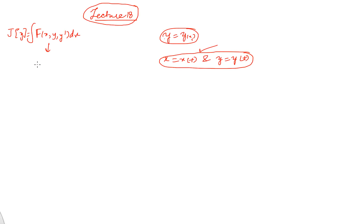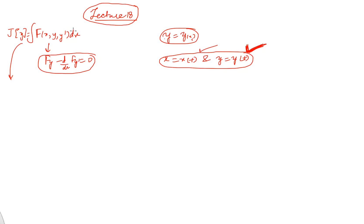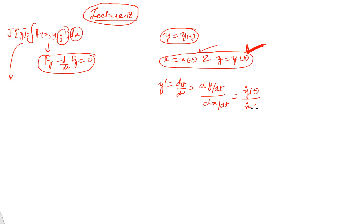We would like to know what the Euler's equation looks like in this case. We know Euler's equation is f_y minus d/dx of f_{y'} = 0. Now if our admissible functions are of this parametric form, how does that Euler's equation look? Suppose we have this parametric representation; we need to find dx in terms of dt and what y' is. y' = dy/dx = (dy/dt)/(dx/dt), which I denote as ẏ/ẋ, where dot represents the derivative with respect to t.